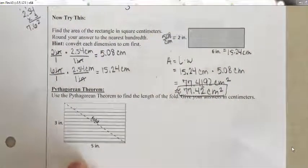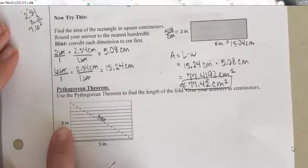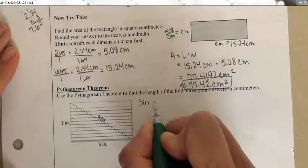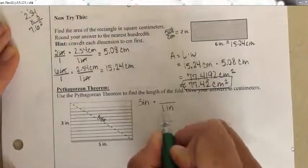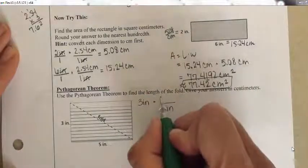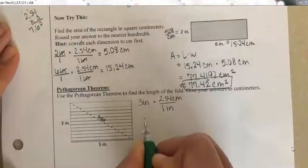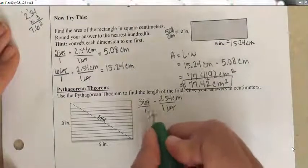Moving on: we're going to use the Pythagorean theorem to find the length of the fold, giving answers in centimeters. The dimensions are in inches, so I'll convert each to centimeters first. I've got 3 inches — to get rid of the inches I divide by 1 inch, which is equivalent to 2.54 centimeters. The inches reduce, giving 7.62 centimeters.